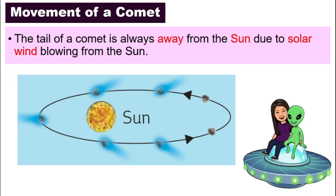One special thing about the movement of a comet is that as it moves around the sun in its own orbit, you will notice that the tail of the comet is always directed away from the sun. Because there is solar wind blowing from the sun, the tail is blown away from the sun. You will never see the tail of the comet pointing toward the sun — it will always be directed outward because of the solar wind.